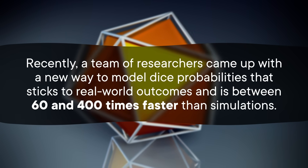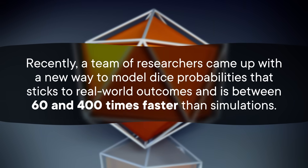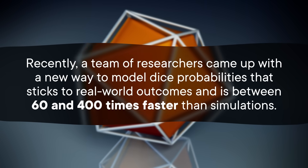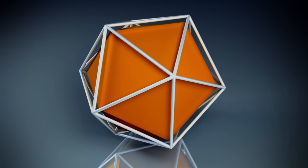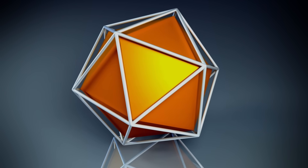Recently, a team of researchers came up with a new way to model dice probabilities that sticks to real-world outcomes and is between 60 and 400 times faster than simulations. Their method uses math to analyze the geometry of a die — no simulations required — although it is a bit of a simplification. For example, they ignore momentum, so each die roll is really more of a gentle placement of the die on a random edge, corner, or face, and then watching it fall over. While critics have complained about how unhinged this is, the method can be pretty accurate.